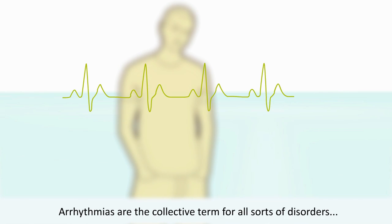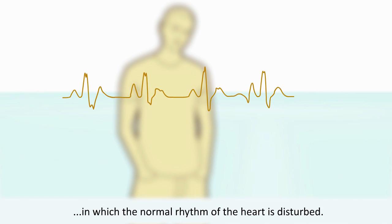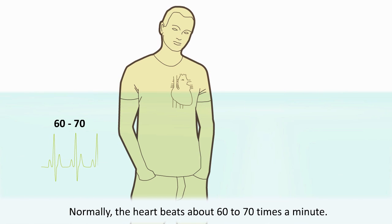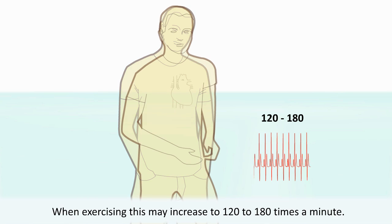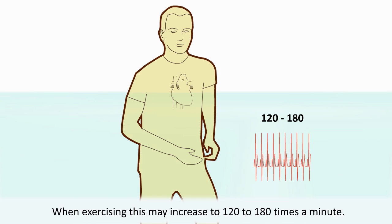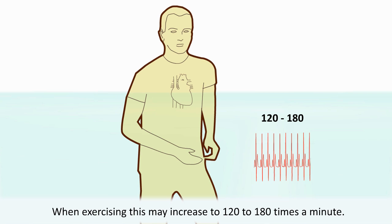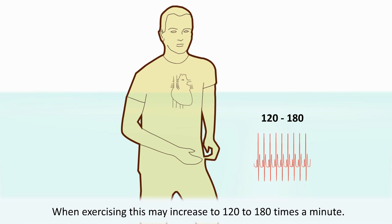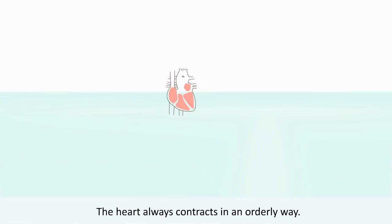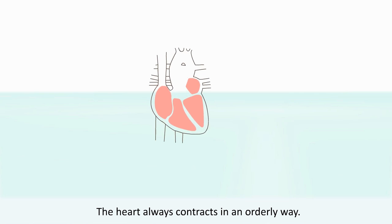Arrhythmias are the collective term for all sorts of disorders in which the normal rhythm of the heart is disturbed. Normally the heart beats about 60 to 70 times a minute. When exercising, this may increase to 120 to 180 times a minute. The heart always contracts in an orderly way.